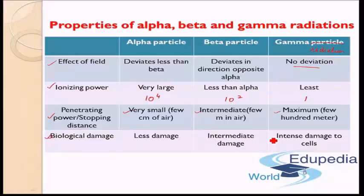Okay, so today's discussion we saw the different properties of alpha, beta, and gamma radiations. Next class we will see how alpha, beta, and gamma radiations are produced — the exact nuclear reaction (not chemical reaction) — the nuclear reaction which is going into the creation of alpha, beta, and gamma radiation, and what are the changes taking place in the nucleus. So till the next class, have a great day. Goodbye.